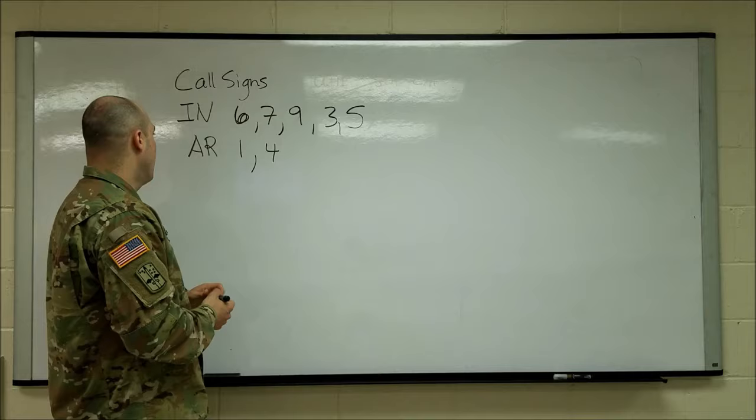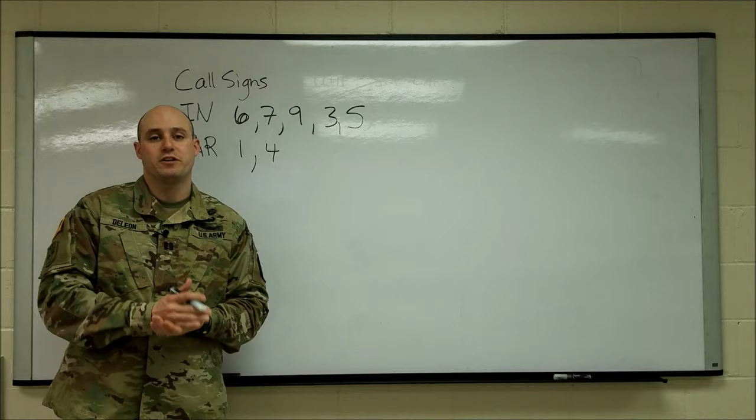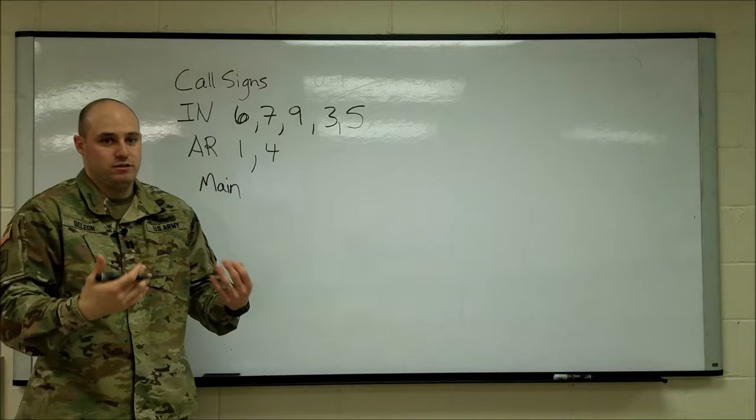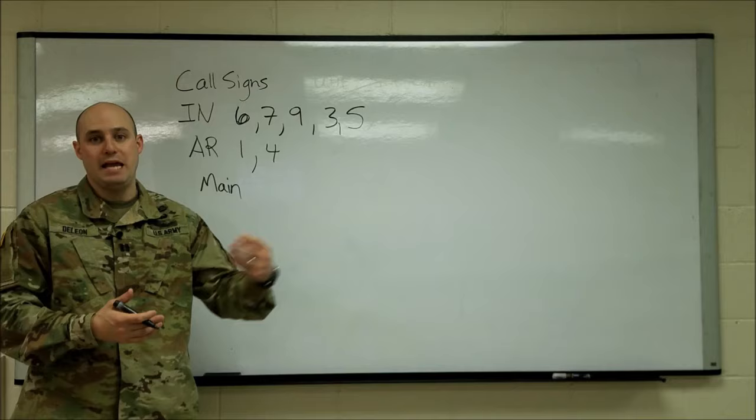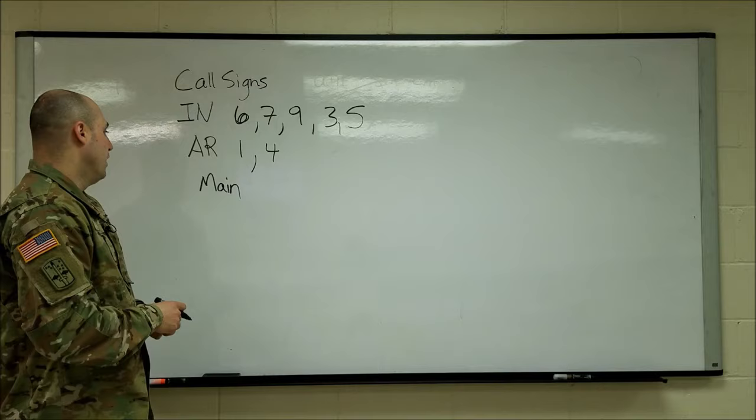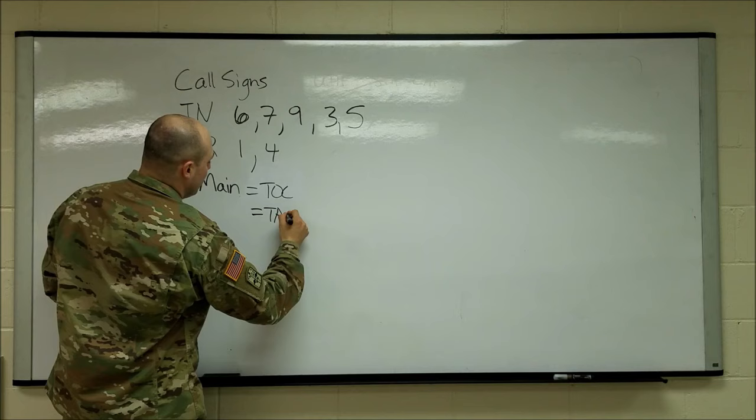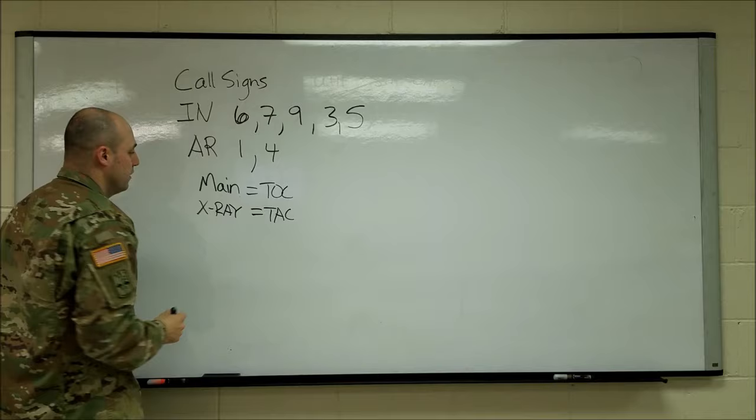All right, the other call signs I want to mention just so you're tracking, is call signs for command nodes. So a TOC, a tactical operation center, is usually called main. That's his call sign. So main. And that main is essentially representing the commander in some way. But if I'm calling for Hawk main, I'm calling for the Hawk command node. Oftentimes we have, this is a TOC usually, oftentimes we have what's called a TAC, which is that forward operating command post. You'll often see that. Typically, you will see TAC as X-ray. So X-ray. That is a normal one to see.